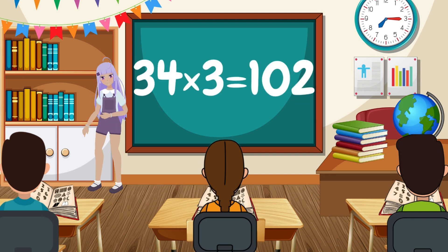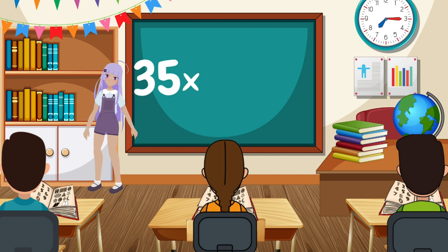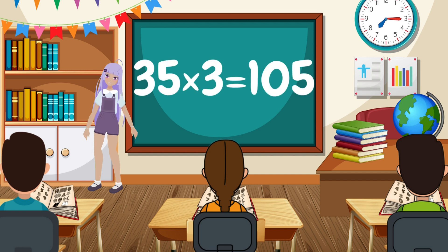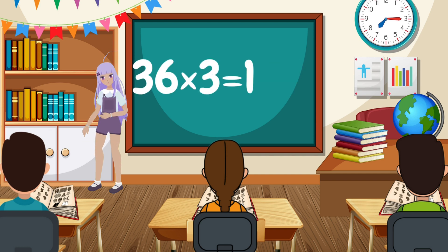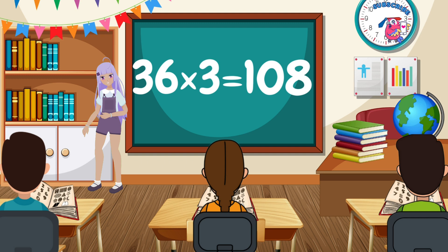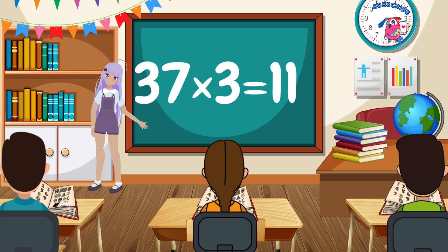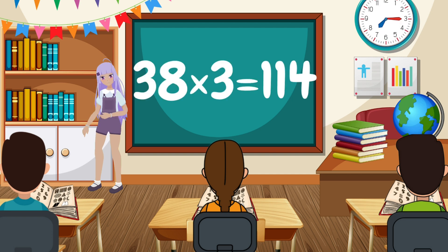35 x 3 equals 105. 36 x 3 equals 108. 37 x 3 equals 111. 38 x 3 equals 114.